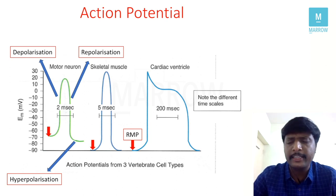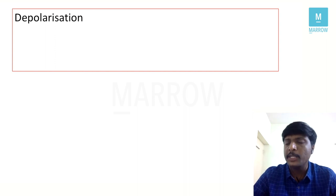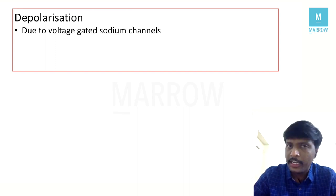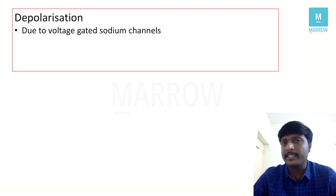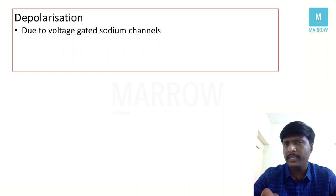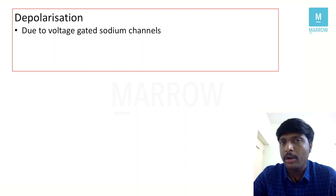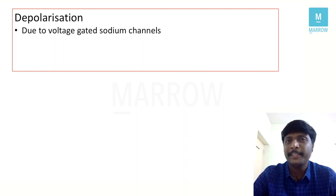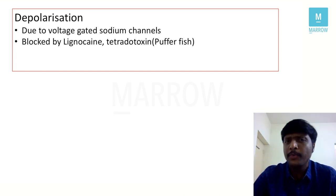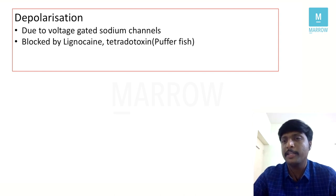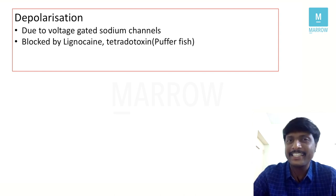Now let's look at the ion channel causes. For depolarization, the most important channels are voltage-gated sodium channels. These voltage-gated sodium channels are blocked — in physiology and pharmacology — by local anesthetic agents like lignocaine (the 'caine' group of drugs), and also by the important toxin tetrodotoxin from the puffer fish. Remember these two blockers: local anesthetics and tetrodotoxin.